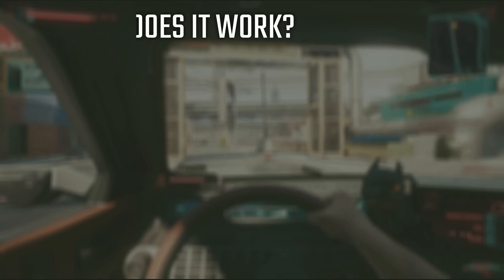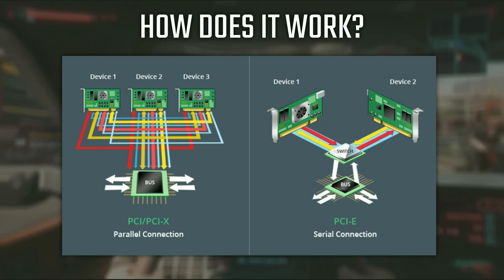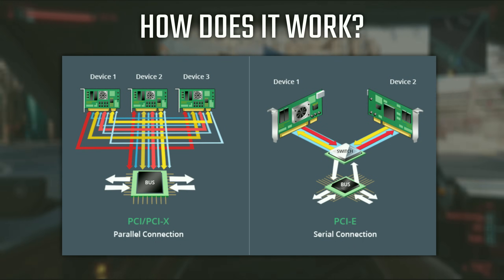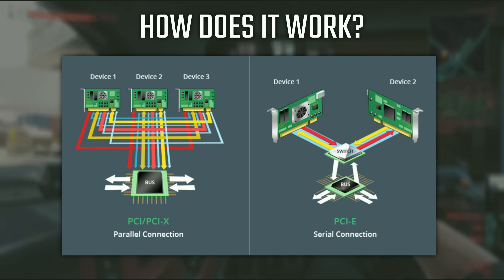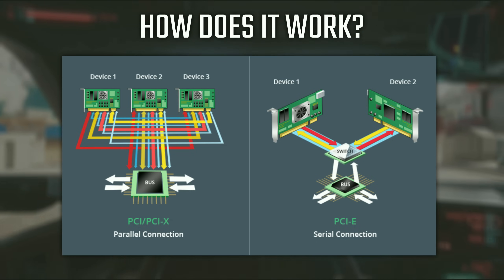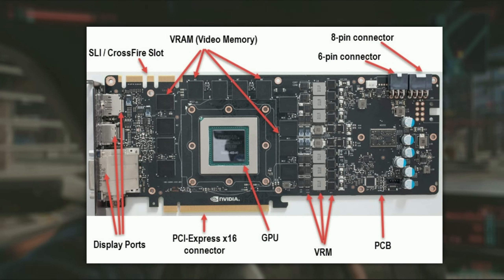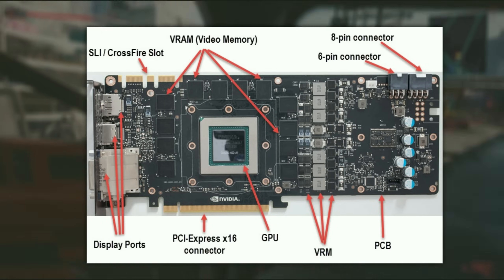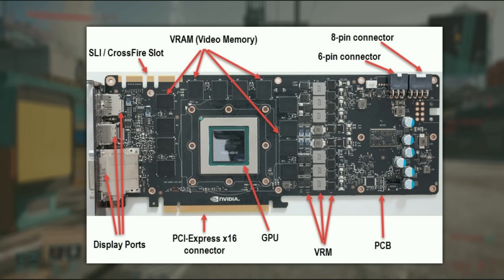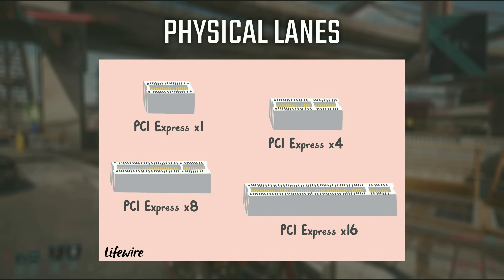PCI Express devices communicate via a logical connection called an interconnect or link, which is a point-to-point communication channel between two PCI Express ports, allowing both to receive ordinary PCI requests or interrupts. The lanes are something physically on the hardware and cannot be added via software, and usually the slots differ depending on the number of lanes they have.